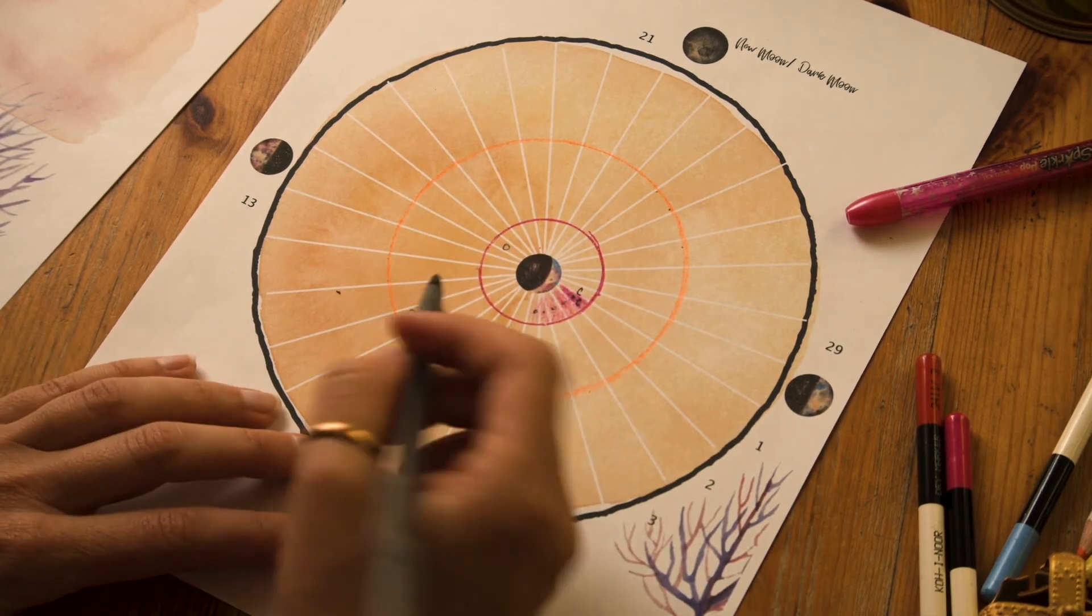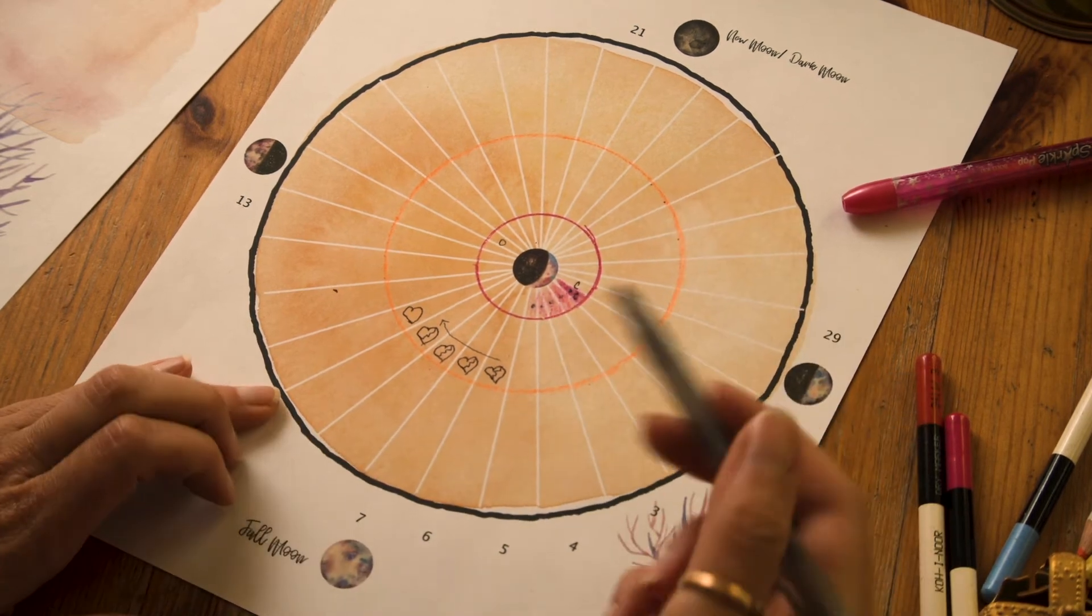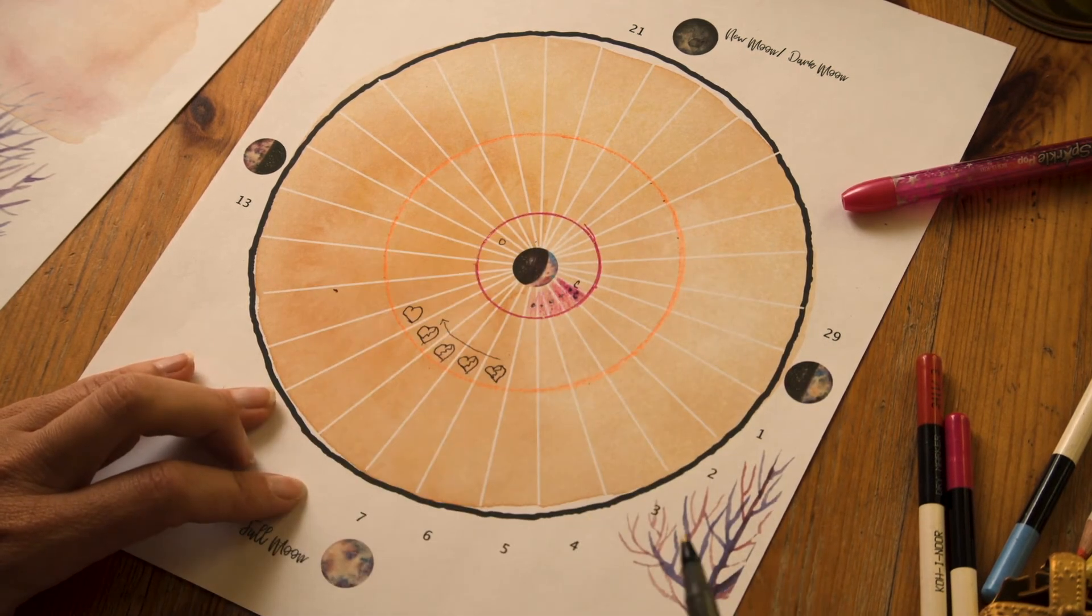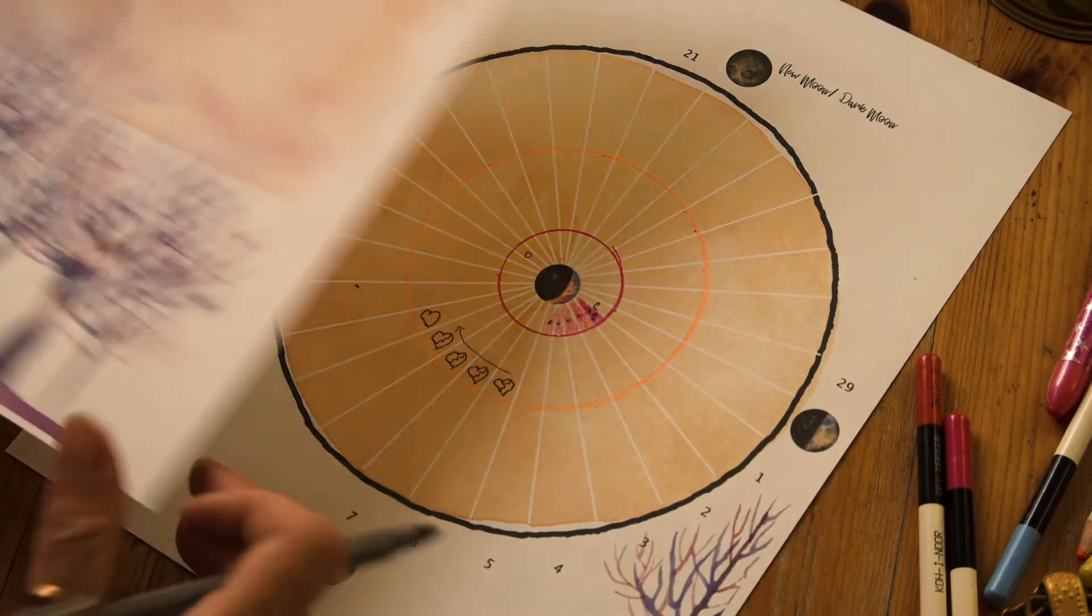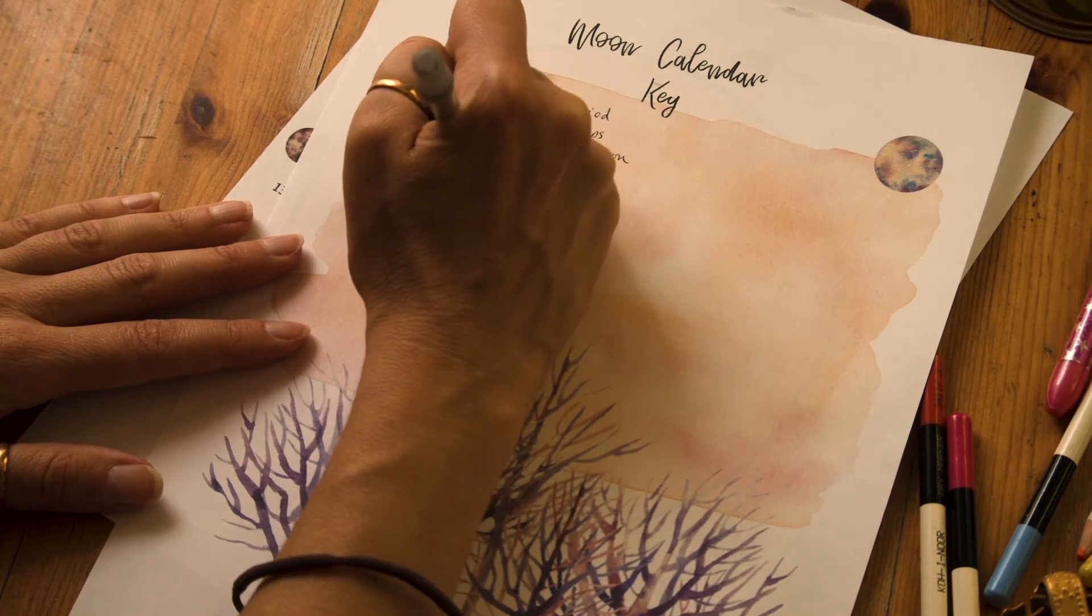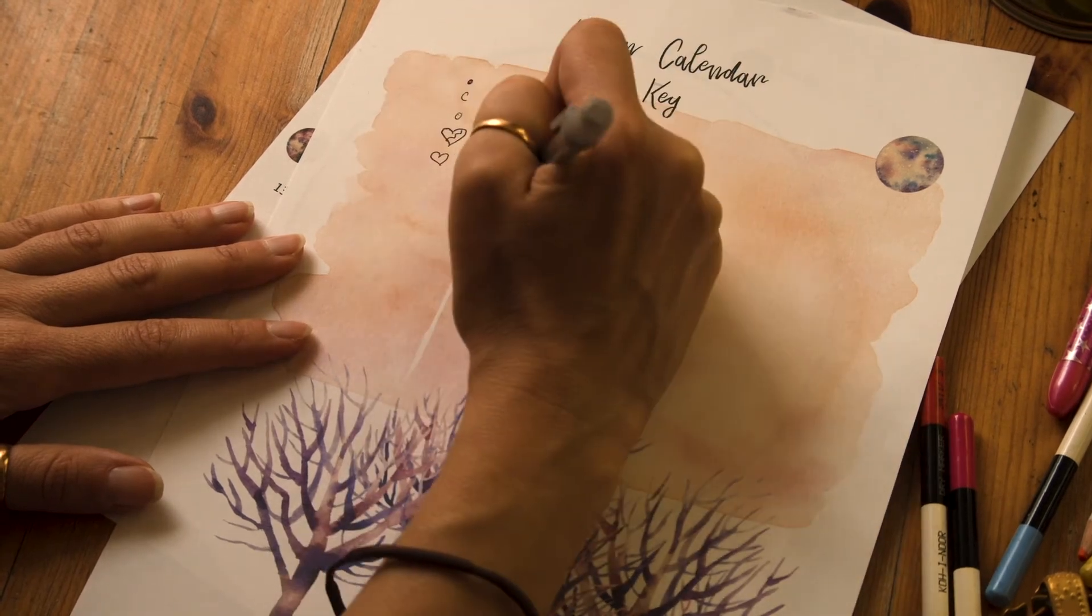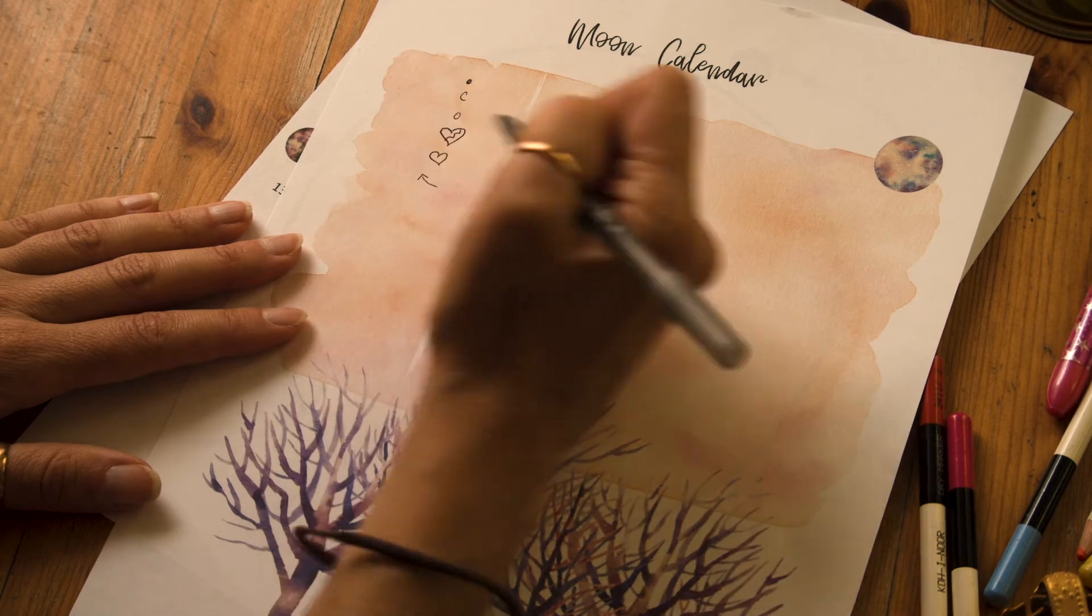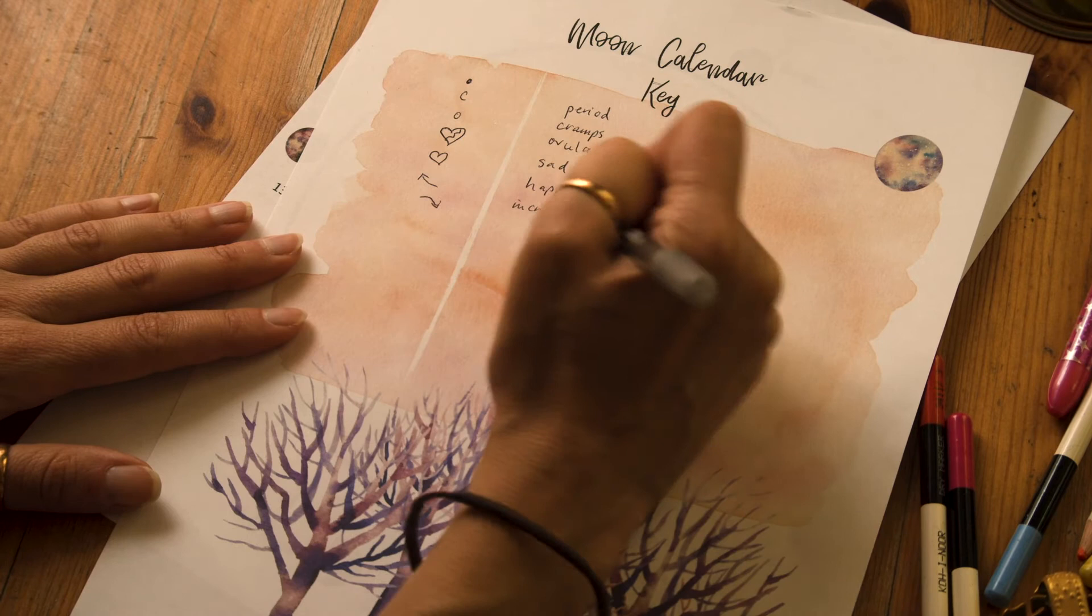And then let's say I had a good day, like a happy feeling day, then I would just maybe put a heart there. So you can do things like that for keeping track of your feelings, then you can see how it correlates to your cycle and then the moon phase. So let's add those symbols to our key: a broken heart for sad, a heart for happy, an arrow going this way for increase, and an arrow going this way for decrease.